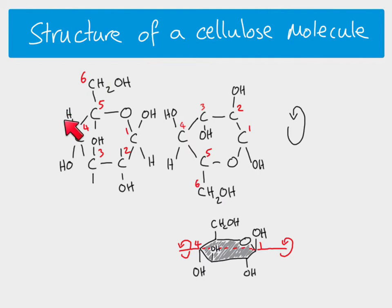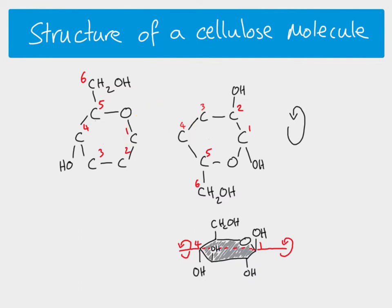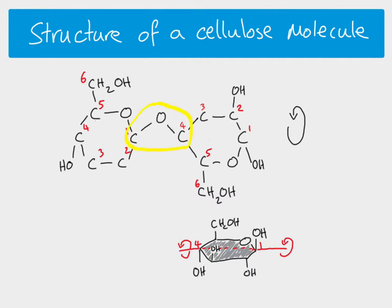So now we have one beta glucose in one orientation and the adjacent beta glucose rotated 180 degrees. Let's think about the glycosidic bonds. Here's carbon one and carbon four. Because we've inverted this molecule, both hydroxyl groups are now above the ring, which means they are able to form a glycosidic bond. When that happens, we also lose a molecule of water.